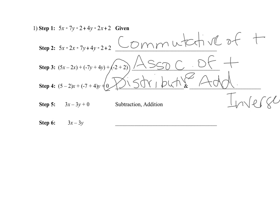From step four to step five, I'm combining 5 minus 2 to get 3x, negative 7 plus 4 to get 3y, and then bringing the zero down. What happened there is just subtraction and addition — that's not really a property, so I will always give those to you. Then from step five to step six, the zero went away. What property says that 3x minus 3y plus zero gives us 3x minus 3y? That's the additive identity property, because whenever you add zero you get the same thing back — additive identity.